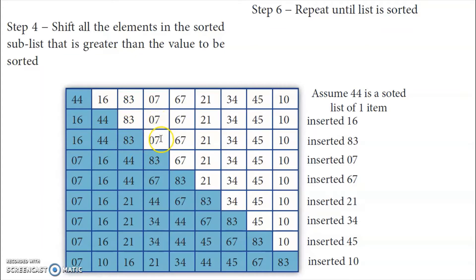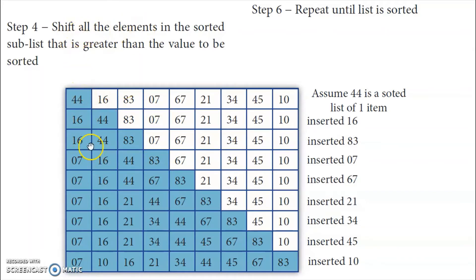Now we add the fourth element. The fourth element is 07. We search for its position by comparing from the first element in the sorted sublist. 7 is lesser than 16, so 7 has to come to the first position. We need to shift all the elements in the sorted sublist one place higher. So 7 goes to the first place, 16 goes to the second, 44 to the third, and 83 to the fourth. So 7 has come to the first place.